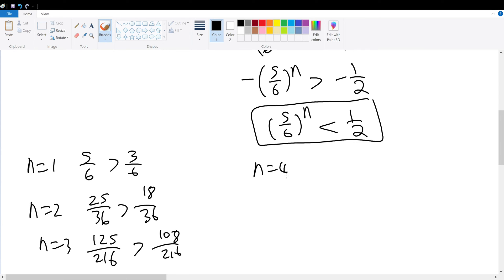What if n=4? When n=4, that's 1296, and that is 5 to the 4, so 625 compared to 1296 divided by 2, which is 648. Wait—648 is finally greater than 625!